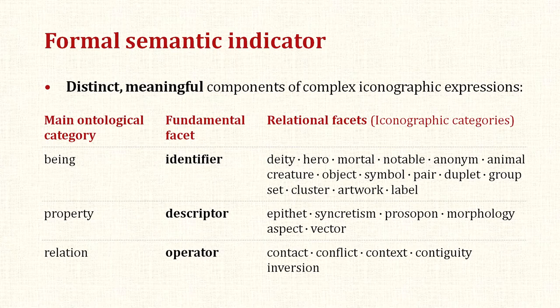The formal semantic indicators' compositional hierarchy consists of three levels. First, fundamental facets — for example, identifier. Second, relational facets or iconographic categories — for example, deity, animal, or object. And third, iconographic subjects — for example, Apollo, snake, or tripod.